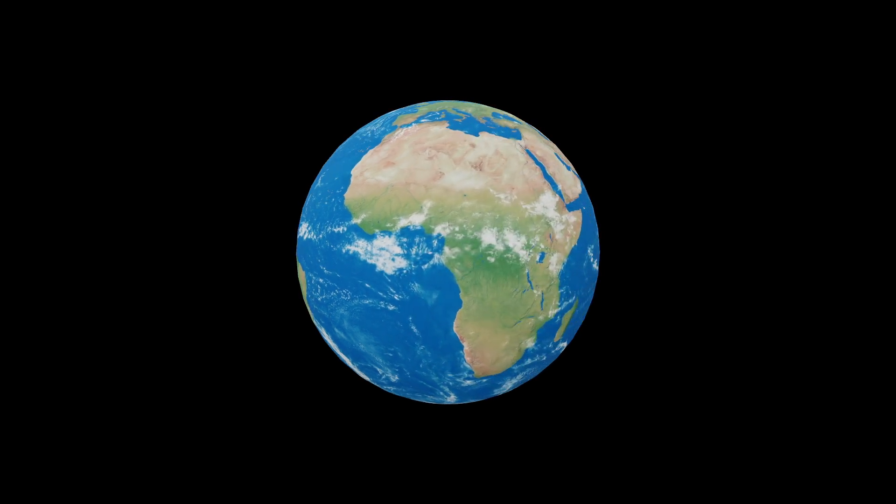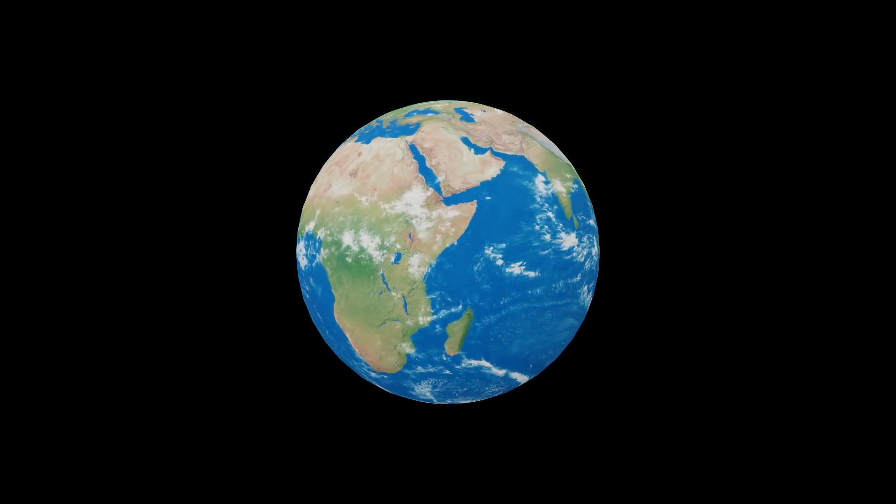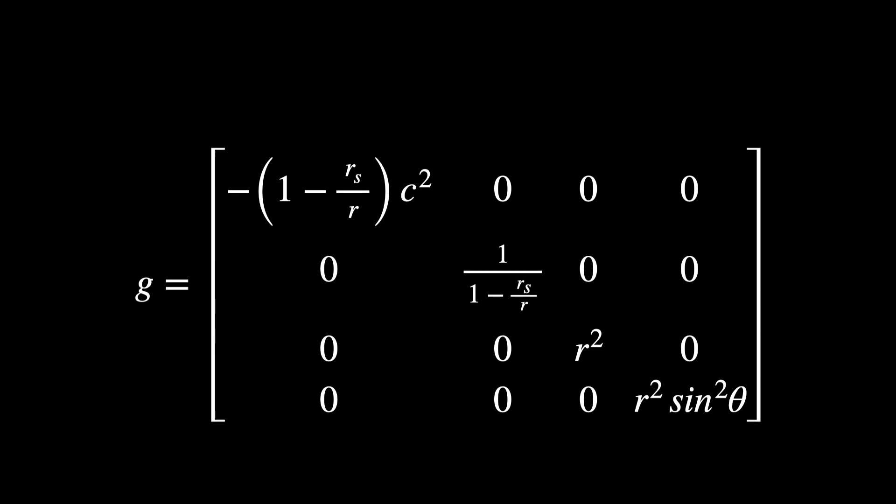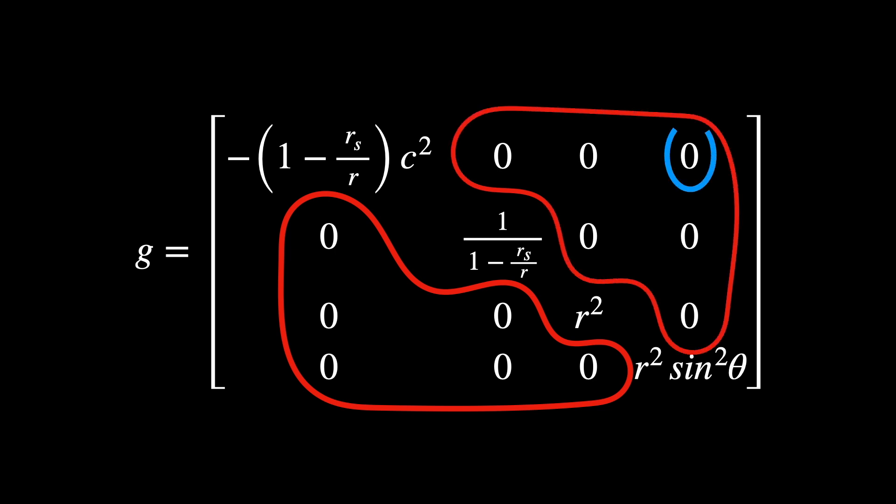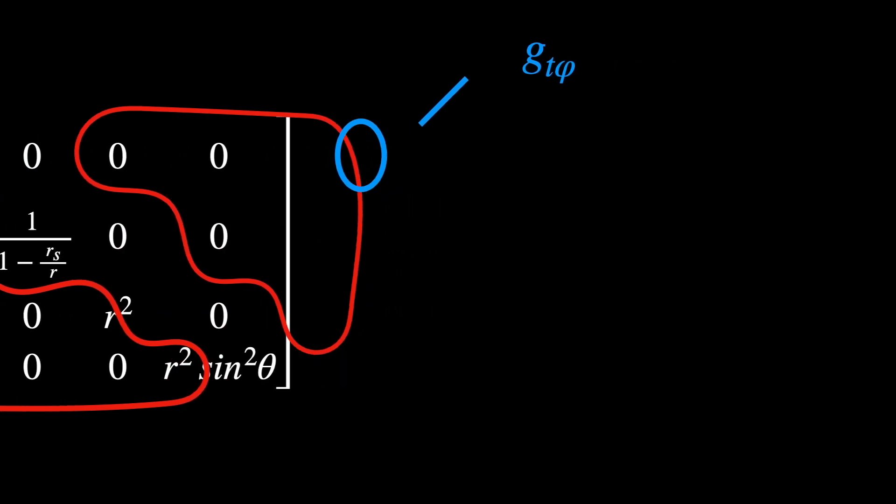In this metric, the angular momentum is zero, which is illustrated in the fact that all the terms not in the diagonal of the matrix are zero, just as g_t_φ for example. If this was not the case, there would be something called frame dragging, which by the way is present in the famous Kerr solution. We'll talk more about it later on.